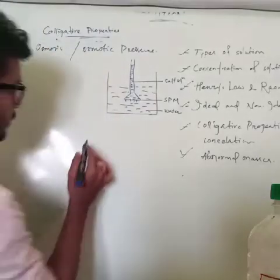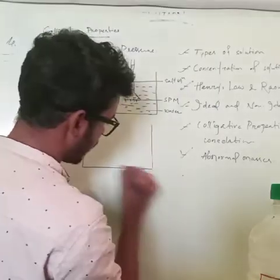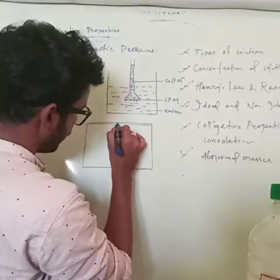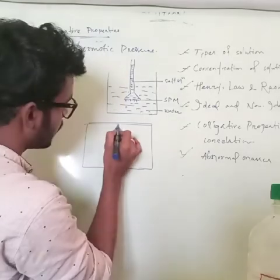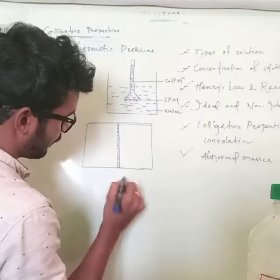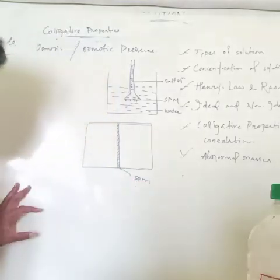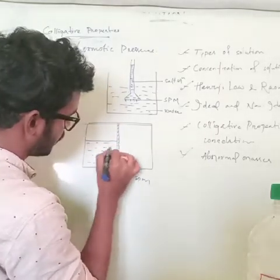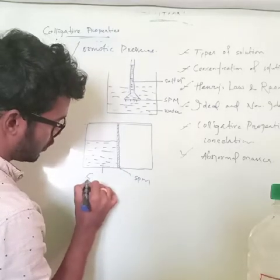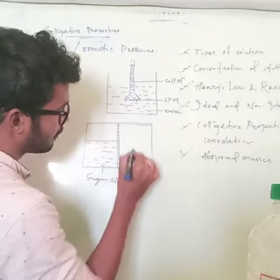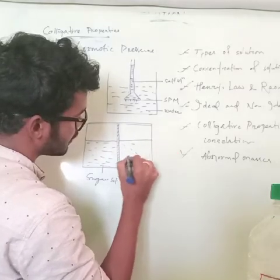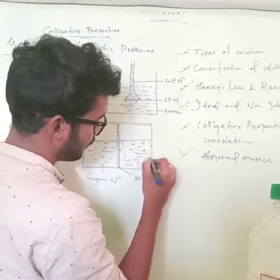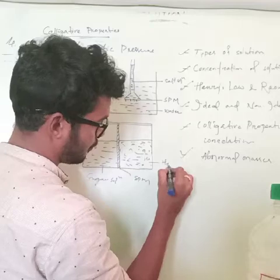Another example: in a container fitted with a semi-permeable membrane (SPM), on one side is sugar solution and on the other side is fresh water. We know that as temperature increases, vapor pressure increases.